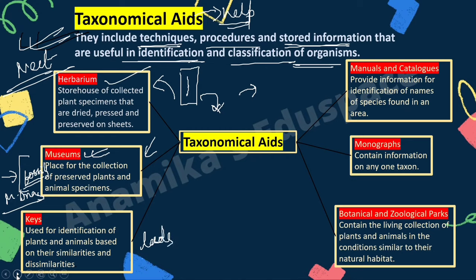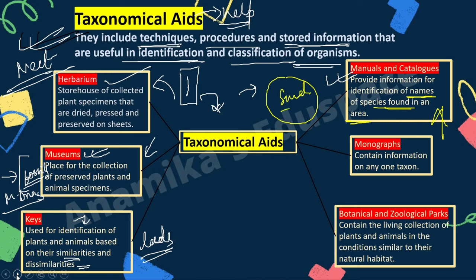Taxonomic aids are the most important part of this chapter for NEET. They include techniques, procedures, and stored information useful for identification and classification of organisms. Herbarium: plant specimens are dried, placed in sheets with scientific name and important information, and preserved in a storehouse. Museum: not only plant but also animal specimens, fossils, and molecular DNAs of animals or plants are collected and preserved. Keys: leads that help identify organisms based on similarity or dissimilarity by selecting and eliminating characters. Manual or catalog: provides information about organisms in a particular area — for example, visiting Sundarbans, a catalog tells you that Royal Bengal tiger, crocodiles, and deer are found there.